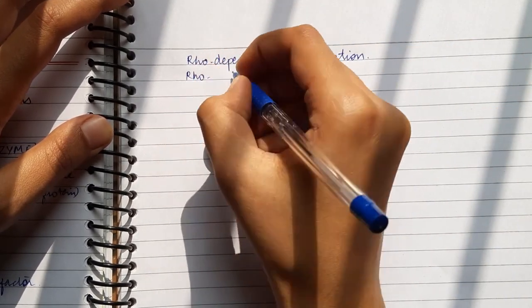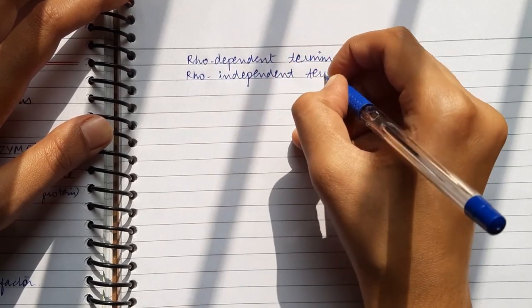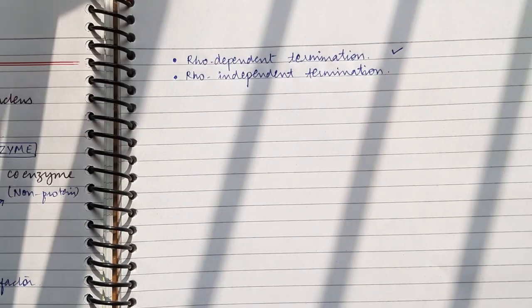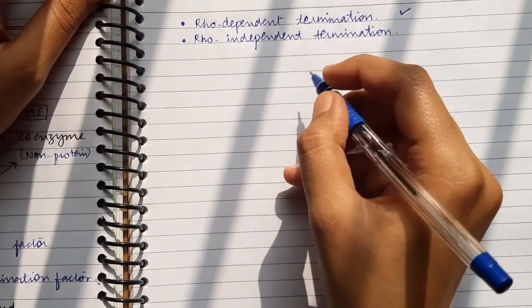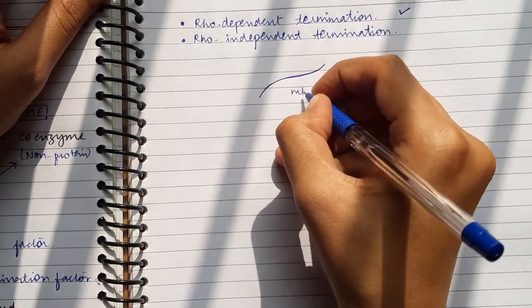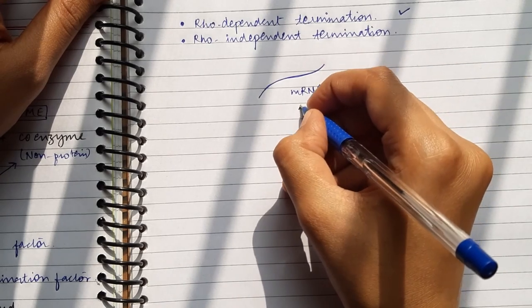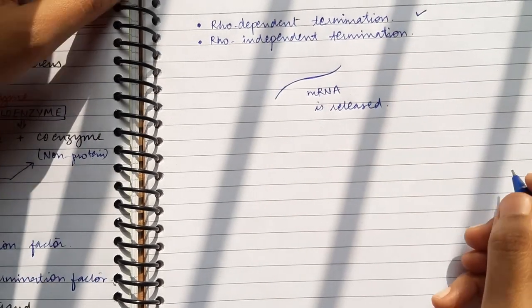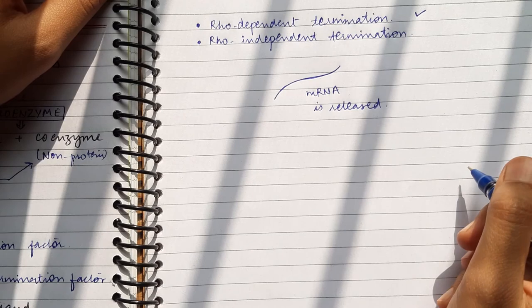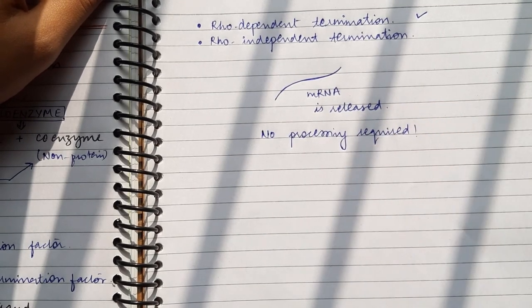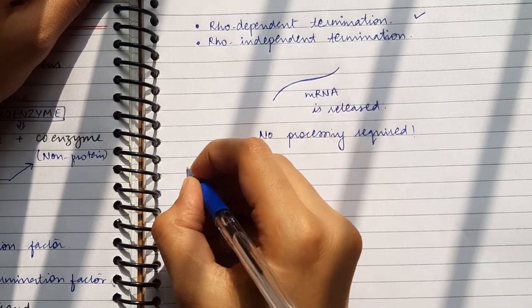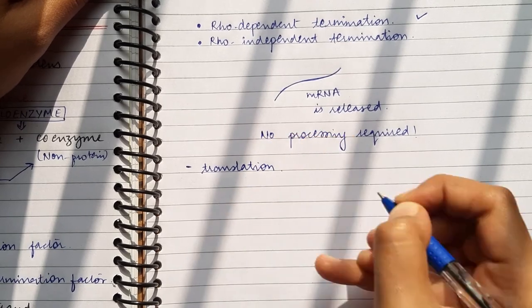So this was rho-dependent termination. There are two types of termination: rho-dependent in which rho factor is used, and then there is rho-independent termination. In independent termination, instead of the factor, the hairpin loop structure itself releases RNA pol from mRNA. Now the mRNA that is released in prokaryotes consists entirely of coding sequences, so there is no need for any processing or post-transcriptional modifications.